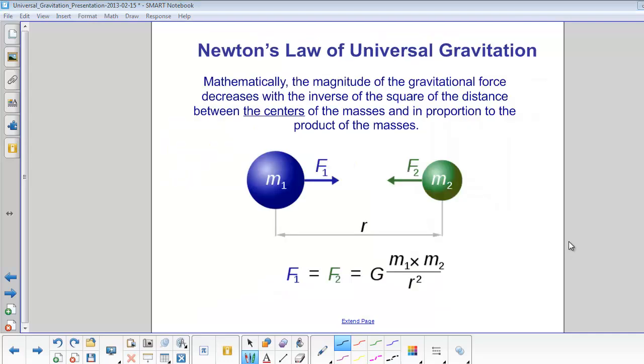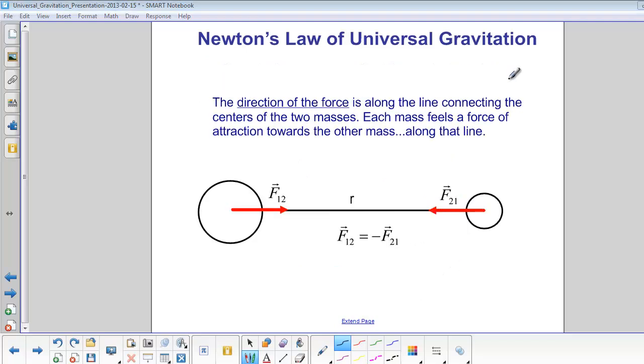So putting it all together, Newton's law of universal gravitation is F equals big G times M1 times M2 divided by R squared. So you find the magnitude of the force by using that equation, but remember force is a vector and it also has a direction. So the direction of the force is along the line connecting the centers of the two masses.